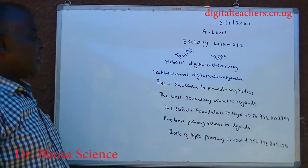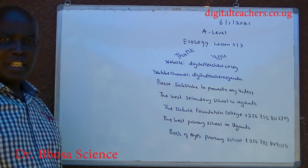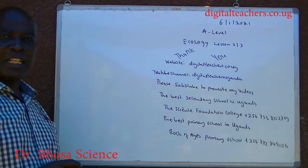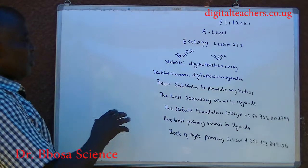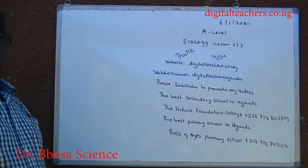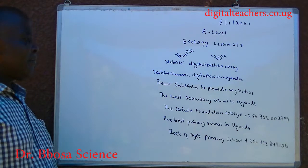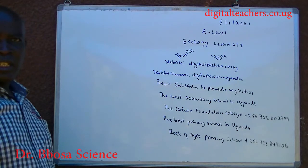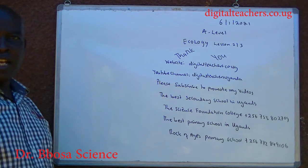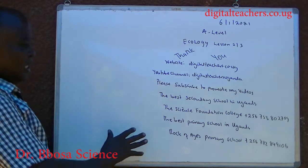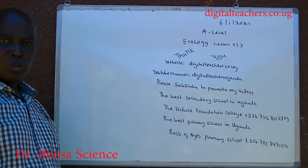Thank you so much for listening to this video. Our website is digitalteachers.co.ug — here find notes and examples and their marking guides in physics, chemistry, biology, math and primary subjects. Also visit our YouTube channel Digital Teachers for related videos. Please subscribe to promote my videos. Subscription is free. The best secondary school in Uganda is the Science Foundation College, and the best primary school in Uganda is Rock of Ages primary school.